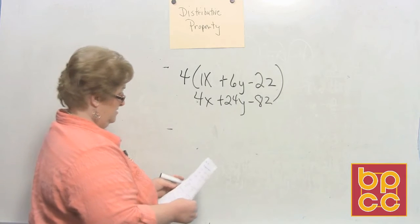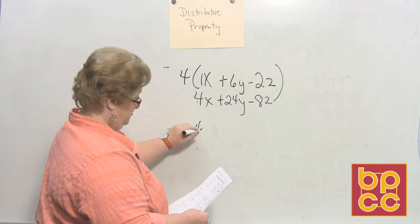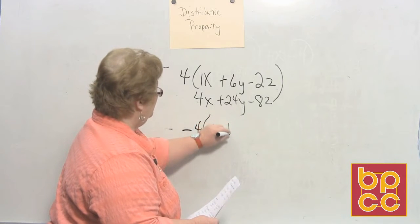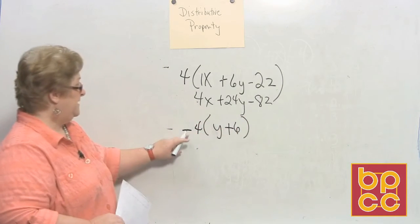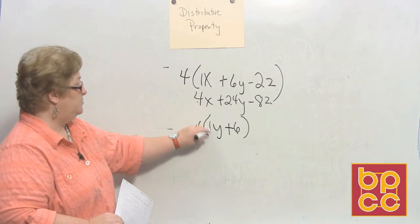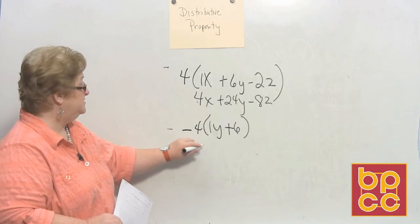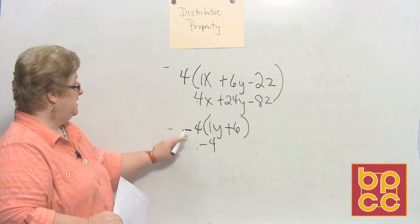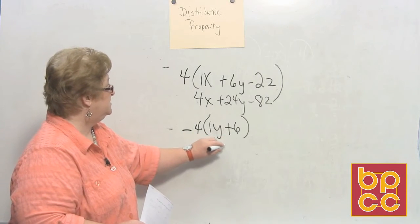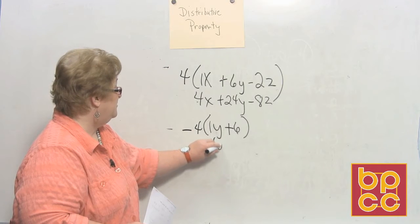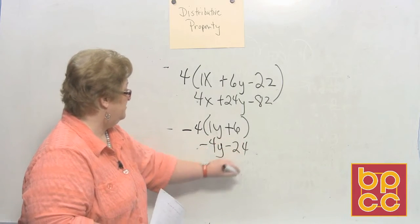Let's try this one. I'd like to do negative 4 times y plus 6. That would be a negative 4 times 1y, and a negative 4 times 1y is negative 4y. And a negative 4 times a positive 6 is a negative 24.